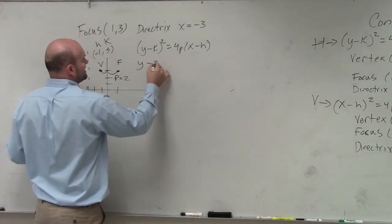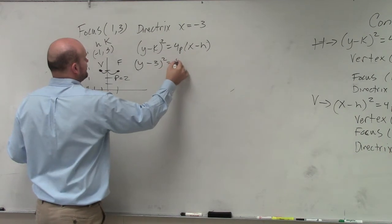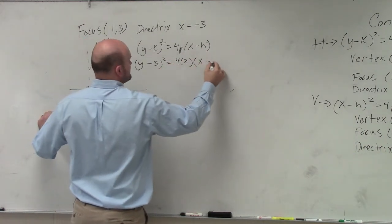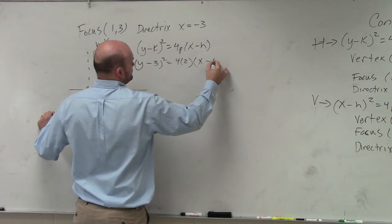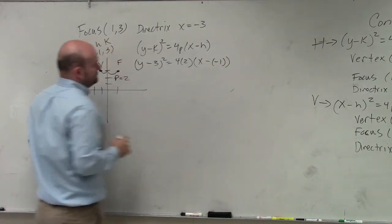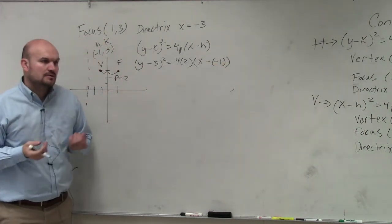So I have (y minus 3) squared equals 4 times 2 times (x minus negative 1). And then we just go ahead and simplify.